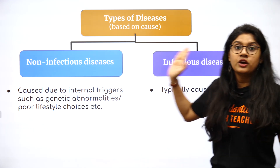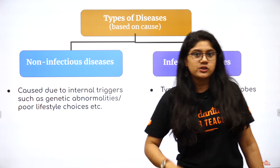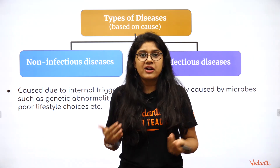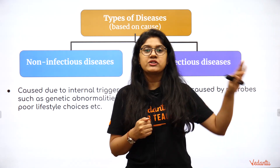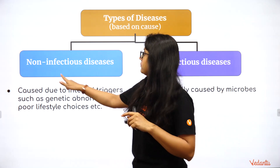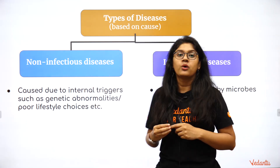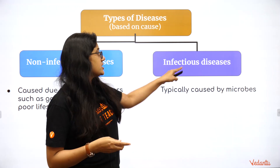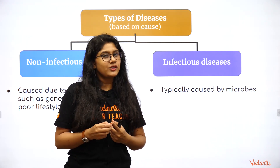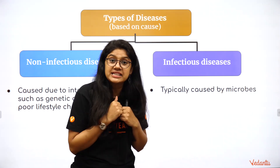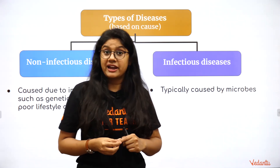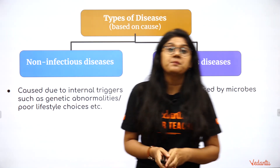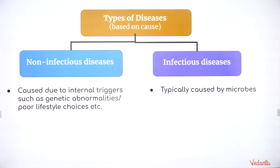Based on causes, diseases can be non-infectious or infectious. Non-infectious diseases cannot spread from one person to another — examples include heart attack and asthma. Infectious diseases can easily spread from one person to another — examples include typhoid and tuberculosis. These diseases transfer easily between people, which is why they are called infectious diseases.